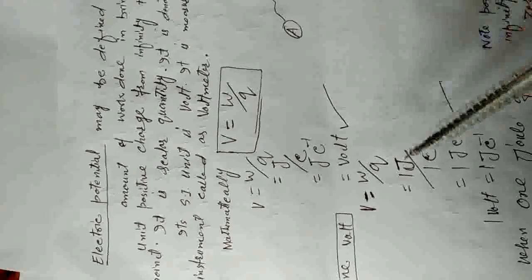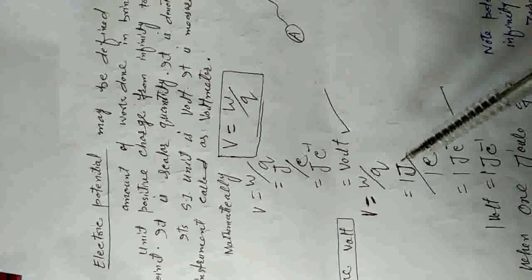In some cases we have to define one volt. One volt of electric potential को define करते हैं। Electric potential depends upon two quantities — work and charge. हम W रखते हैं one joule (SI unit of work) और Q रखते हैं one coulomb, ताकि हम one volt of electric potential define कर सकें।